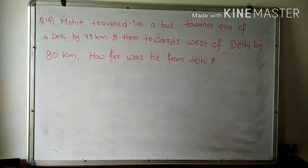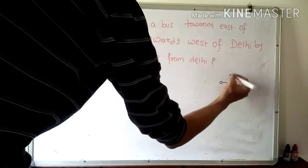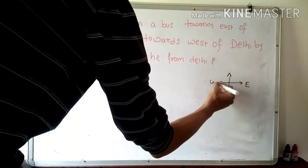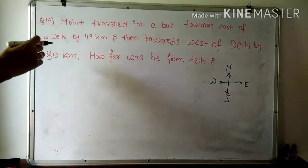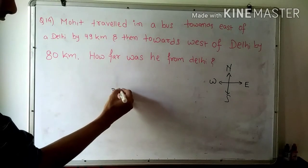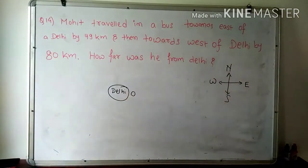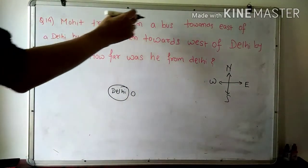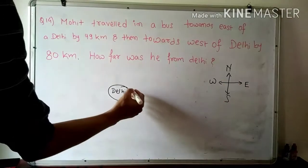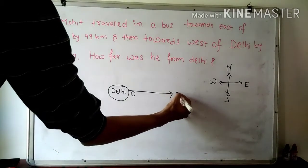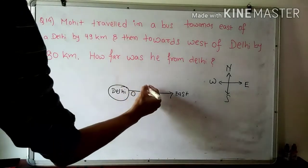First of all, we write a direction chart: east is to the right, west is to the left, north is upward, and south is downward. Suppose Delhi is the center place — take it as origin. From Delhi, Mohit moves in a bus towards east direction, which is the right side. He covers 49 km in the east direction.